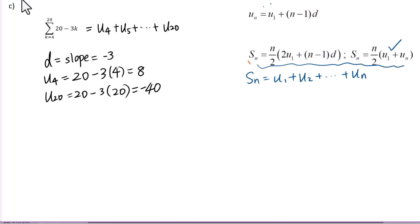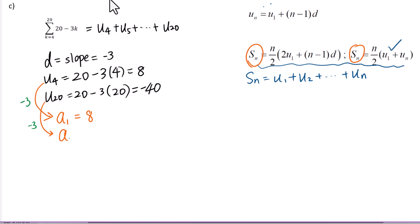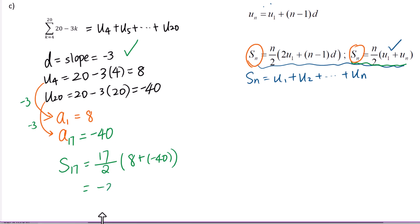We want to use the formula for S sub n to figure out this sigma notation, so we will create a new equation. U sub 4 we will change into A sub 1. U sub 20 we will change into A sub 17 because 20 minus 4 plus 1 equals 17. U sub 20 equals negative 40. Then we can use this formula: S sub 17 equals 17 over 2 times 8 plus negative 40 equals negative 272.